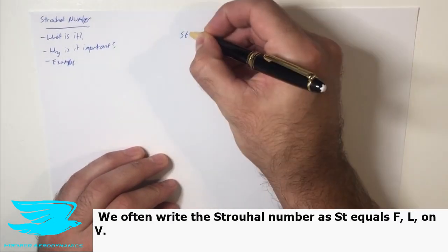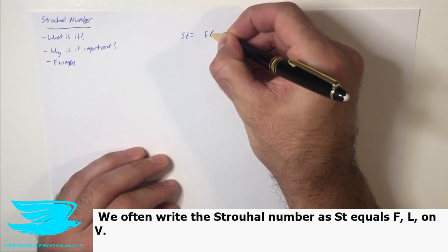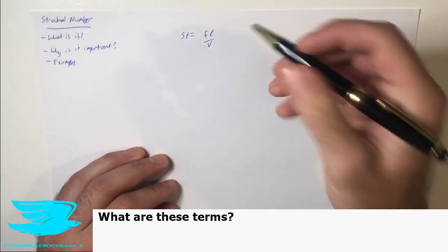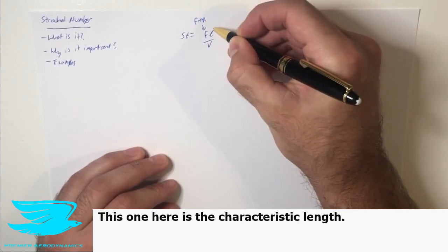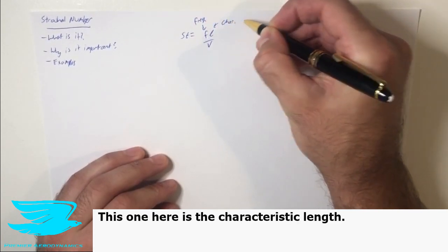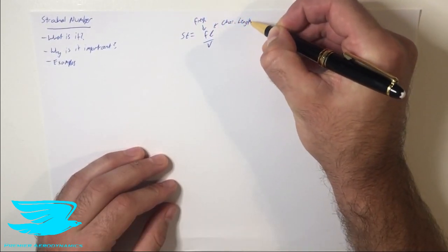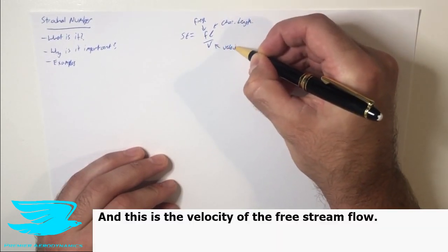We often write Strouhal number as St equals fL over v. What are these terms? Well, this one here is the frequency, this one here is the characteristic length, and this is the velocity of the free stream flow.